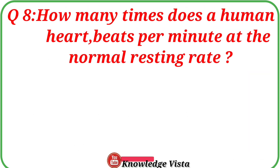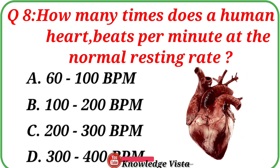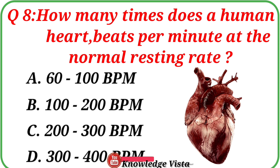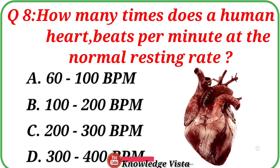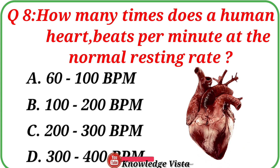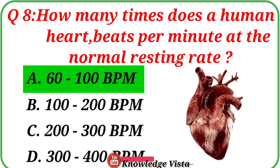Question No. 8. How many times does a human heart beat per minute at the normal resting rate? Your options are: A. 60–100 BPM, B. 100–200 BPM, C. 200–300 BPM, D. 300–400 BPM. Correct answer is option A: 60–100 BPM.